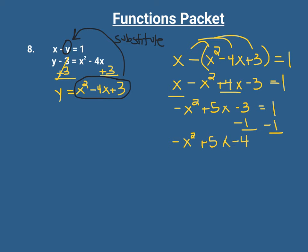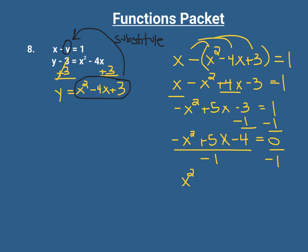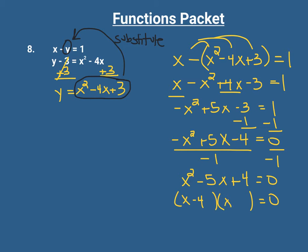To get rid of the negative leading coefficient, we're allowed to divide an equation by whatever we want as long as we divide both sides by the same thing. Dividing everything by negative 1, we get positive x squared minus 5x plus 4 equals 0. From here we can factor: two numbers that multiply to positive 4 and add to negative 5 are negative 4 and negative 1, so we wind up with x equals 4 and x equals 1.